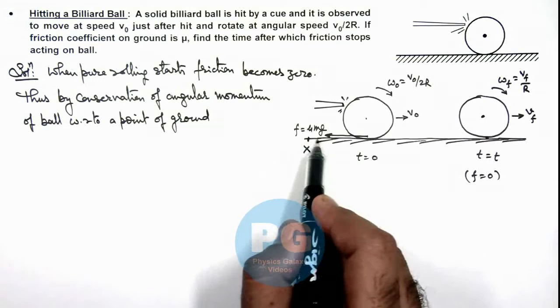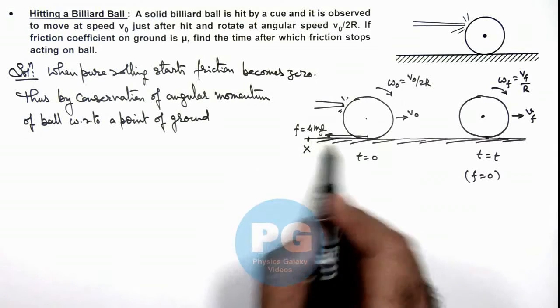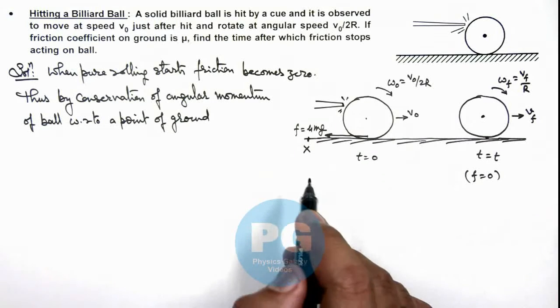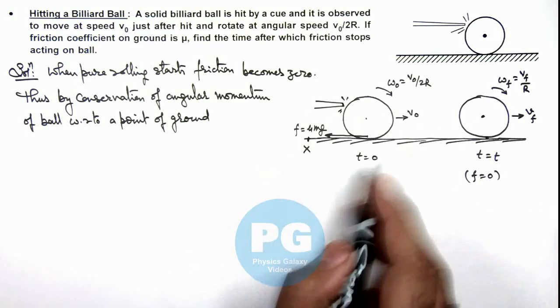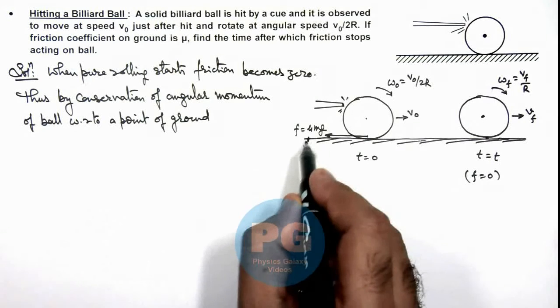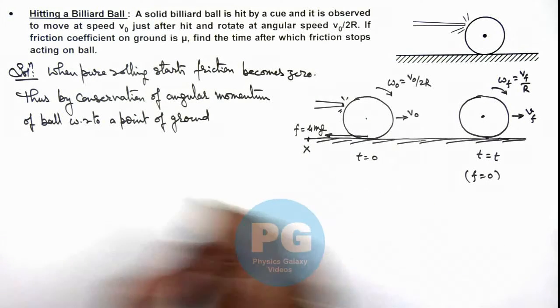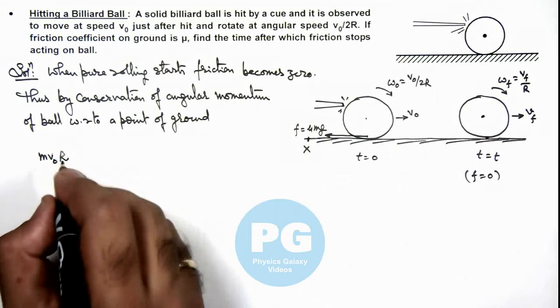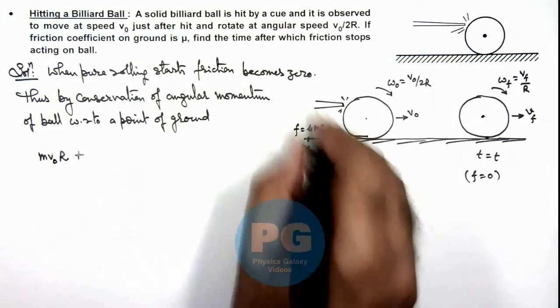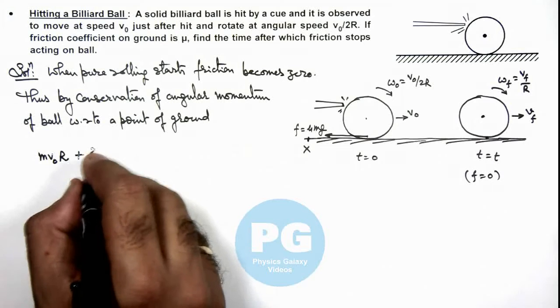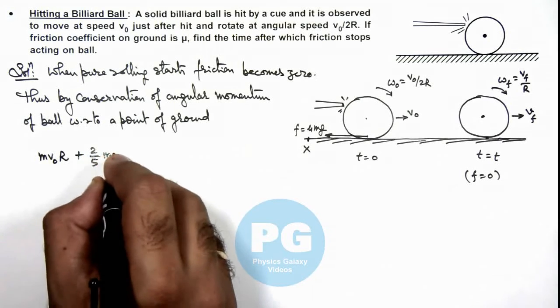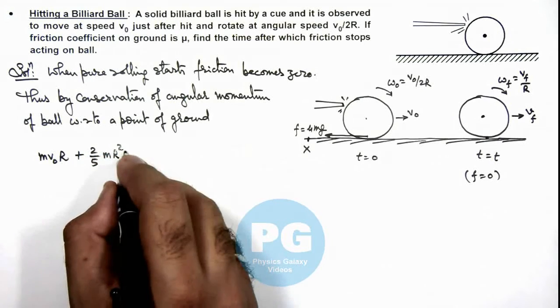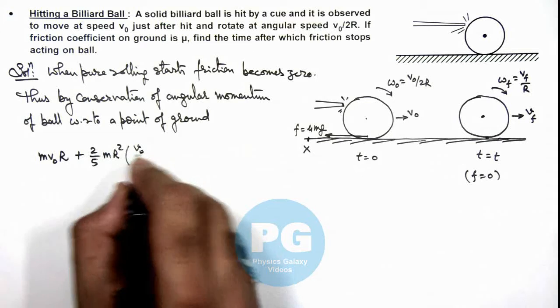Other than any point on ground, the angular momentum of ball will not remain conserved. So we can write that angular momentum of ball about point X initially is mv₀r plus its angular momentum due to rotational motion, which is (2/5)mr² multiplied by ω, which is v₀/2r.